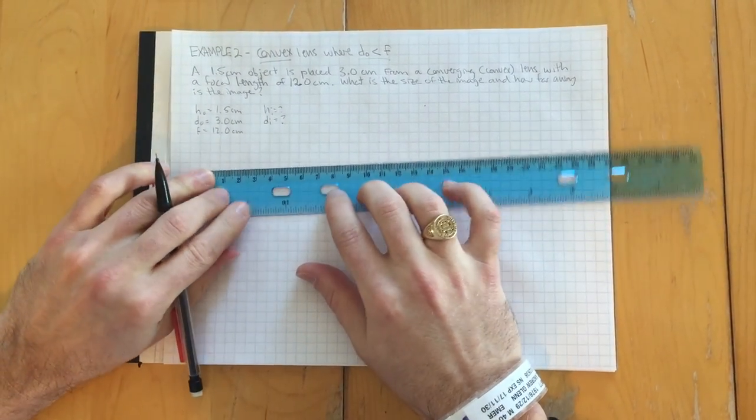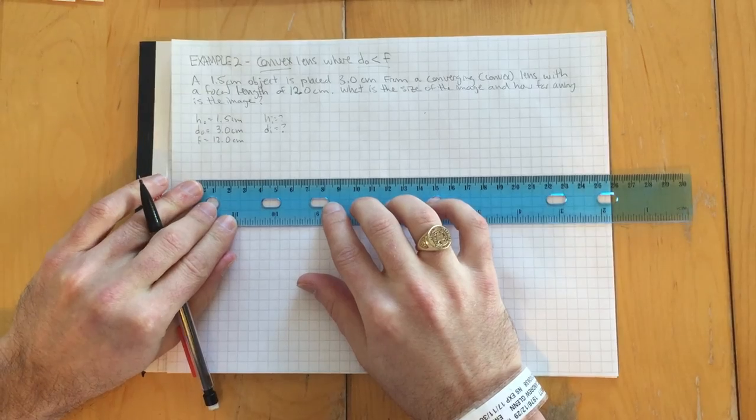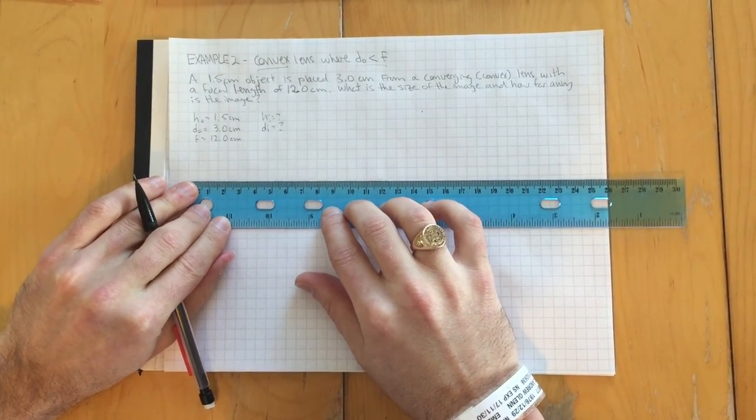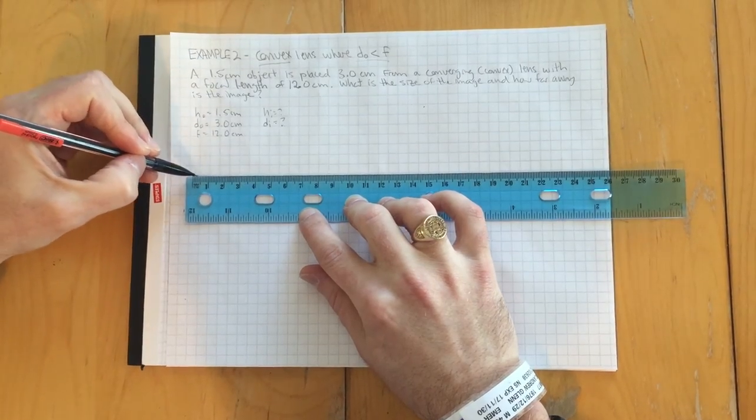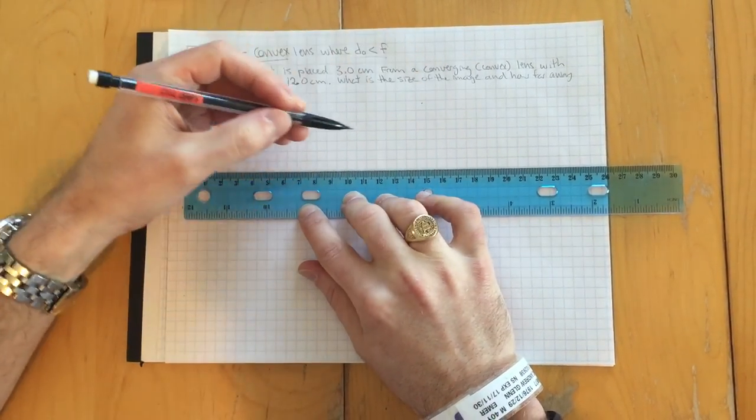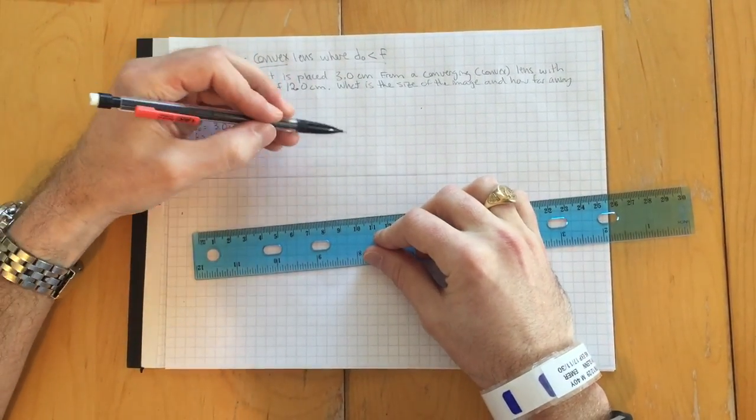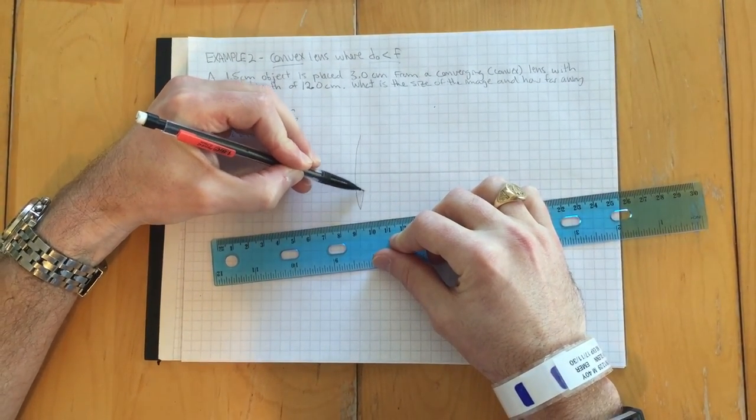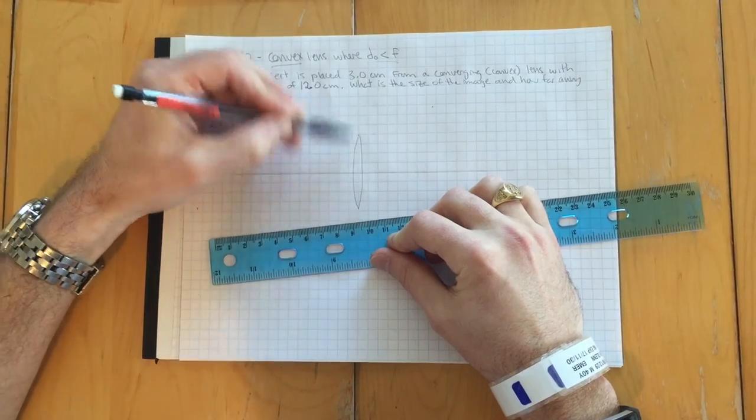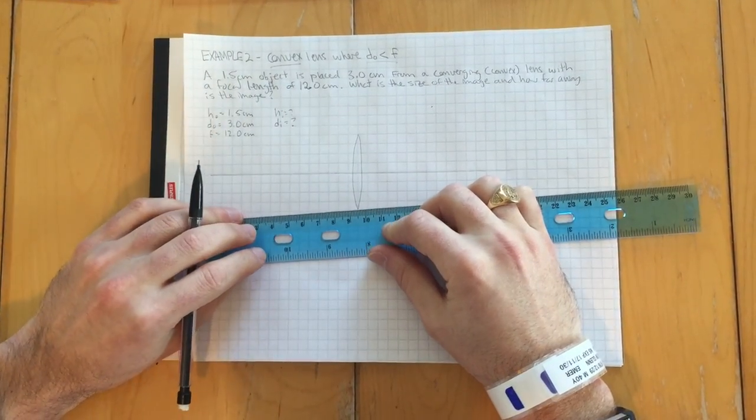So to set up the lens diagram, we do something very similar. We draw, I'll do it down here, principal plane again, which is just the line that would cut through the middle of the lens. This is again a diverging lens. I'll try to draw it relatively large. How you draw that does not make any difference here.